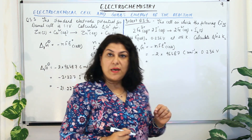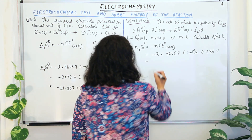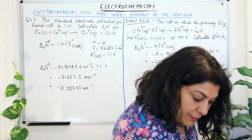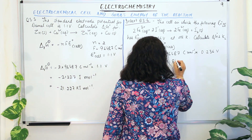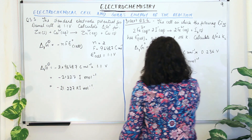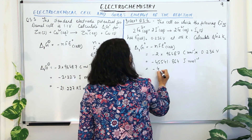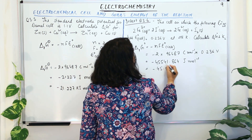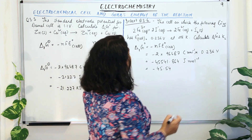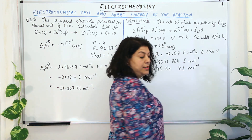ΔrG° = −2 × 96487 coulombs per mole × 0.236 volts, which gives minus 45541.864 joules per mole. Converting to kilojoules and rounding to 2 decimal places, ΔrG° = −45.54 kilojoules per mole.